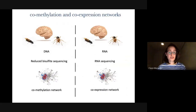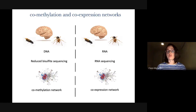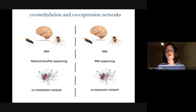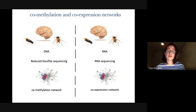We extracted the brain this time, since it seemed the best organ to look for behavioral differences. We took adult queens — just before and after they mated — so young queens and old queens that had already established a colony. We also took workers right out of the pupae and old workers that had already established their behavior, using Formica, a great model organism in Finland. We extracted both DNA and RNA, and performed reduced bisulfite sequencing as well as RNA sequencing to construct both a co-methylation and a co-expression network.